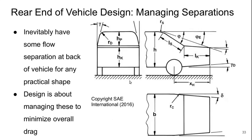Welcome to part 5 of lecture 5 of bluff body aerodynamics. Now let's turn our attention to the rear end of the vehicle, where some really important effects come into play. This is all about managing separations. Inevitably, we are going to have some flow separation at the back of any vehicle for any practical shape. The process of vehicle design from an aerodynamic perspective is about managing these separations to minimize the overall drag generated.